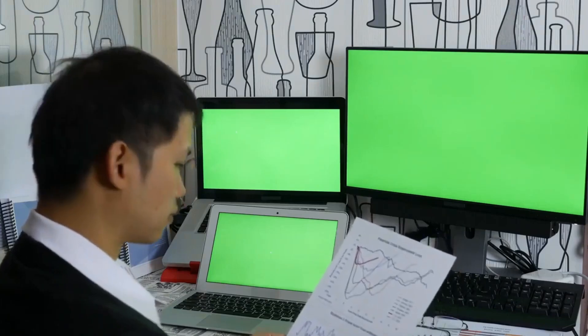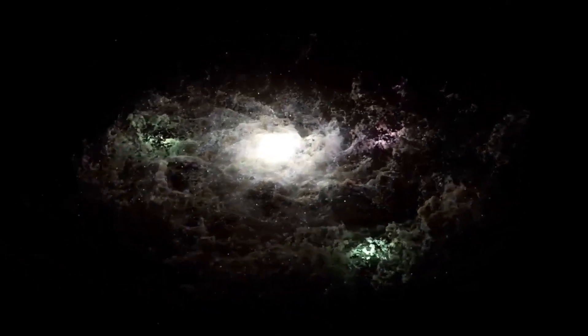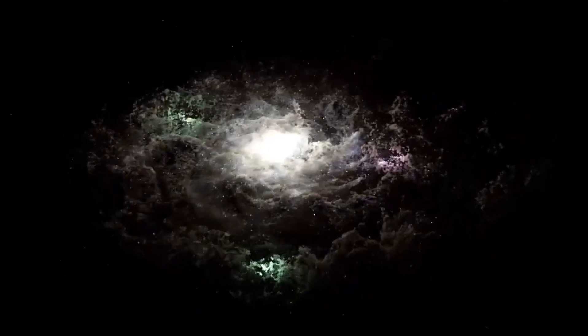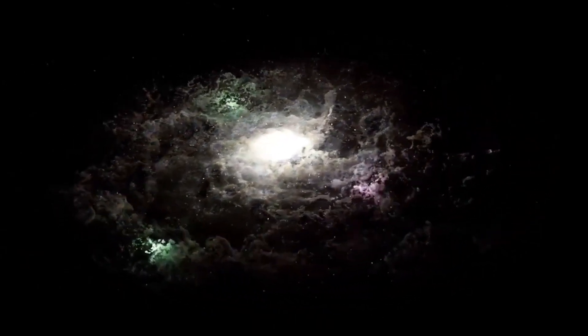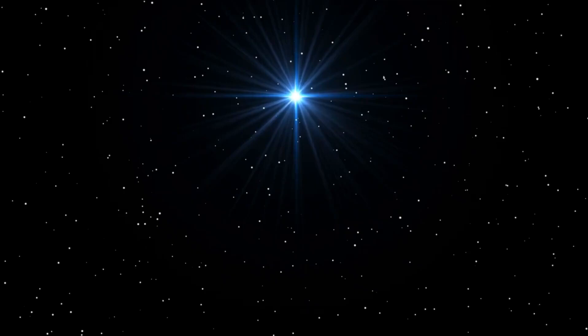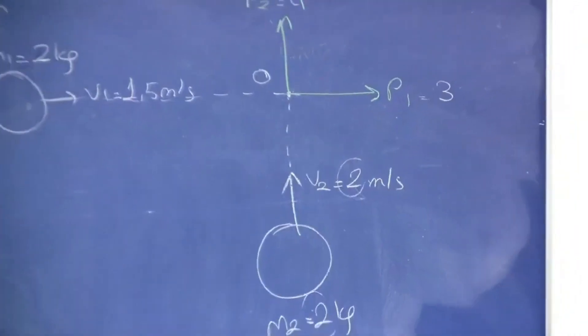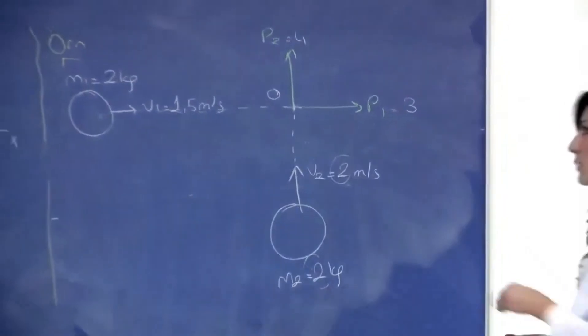In the meantime, Betelgeuse remains a beacon in the night sky, a reminder of the vastness and mystery of the cosmos. For those in the Southern Hemisphere, the star is easily visible at dusk, shining brightly on the shoulder of Orion. Even in the Northern Hemisphere, Betelgeuse can be seen as the days grow shorter, a fiery red that captures the imagination and inspires wonder. As we watch and wait for the next chapter in Betelgeuse's story, we are reminded that the universe is full of surprises, and that the next great discovery is always just beyond the horizon.